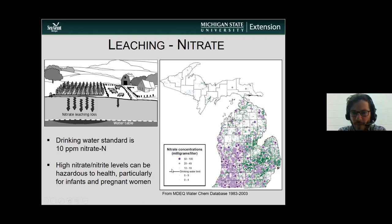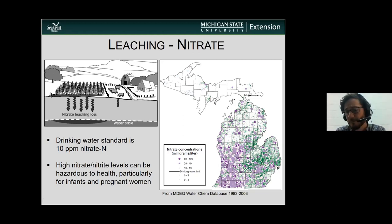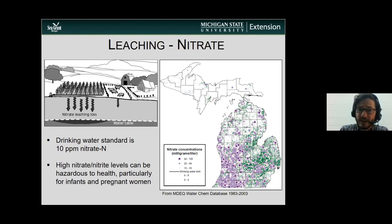This is an older map from 1983 to 2003, so make sure if you're curious about your community, check for updated data. But as you can see, there were some areas within Michigan that had high nitrate concentrations within the groundwater.